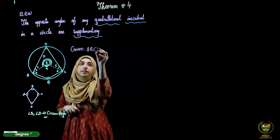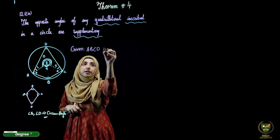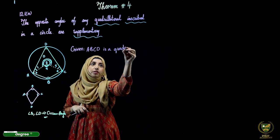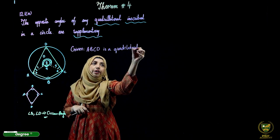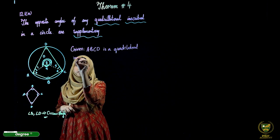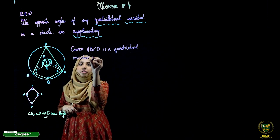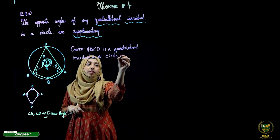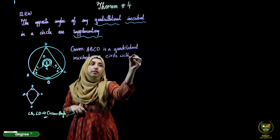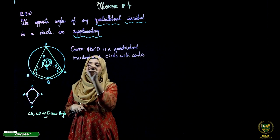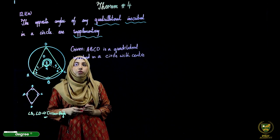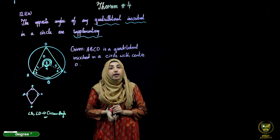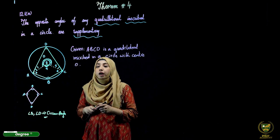Given: A, B, C, D is a quadrilateral inscribed in a circle with center O. We have mentioned that ABCD is a quadrilateral whose center is O.